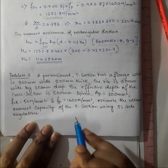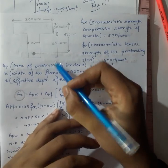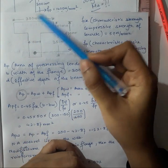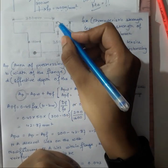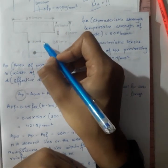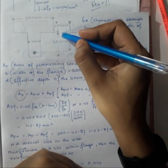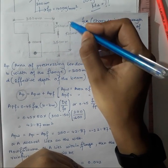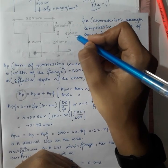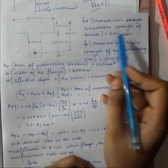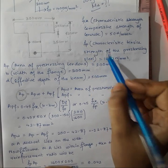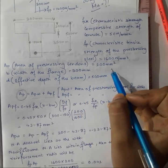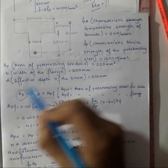Estimate the ultimate moment capacity of the T-section using IS code regulation. The section has a flange 300 mm wide and 200 mm thick, web width 150 mm and depth 350 mm, and effective depth 500 mm. The data given: fck = 50 N/mm², fp = 1600 N/mm², area of pre-stressing tendons = 200 mm², b = 300 mm and d = 500 mm.